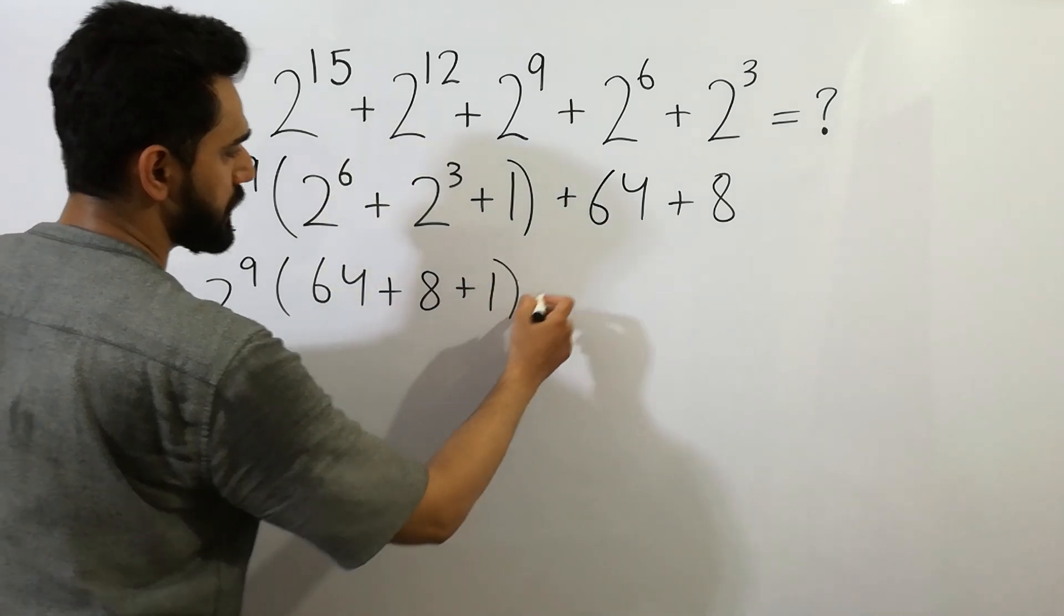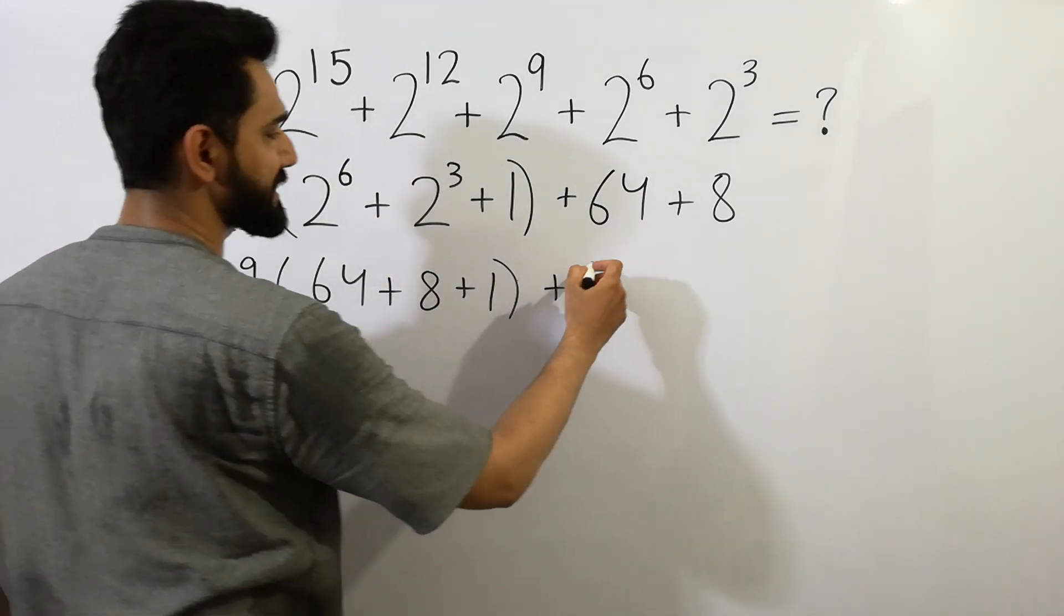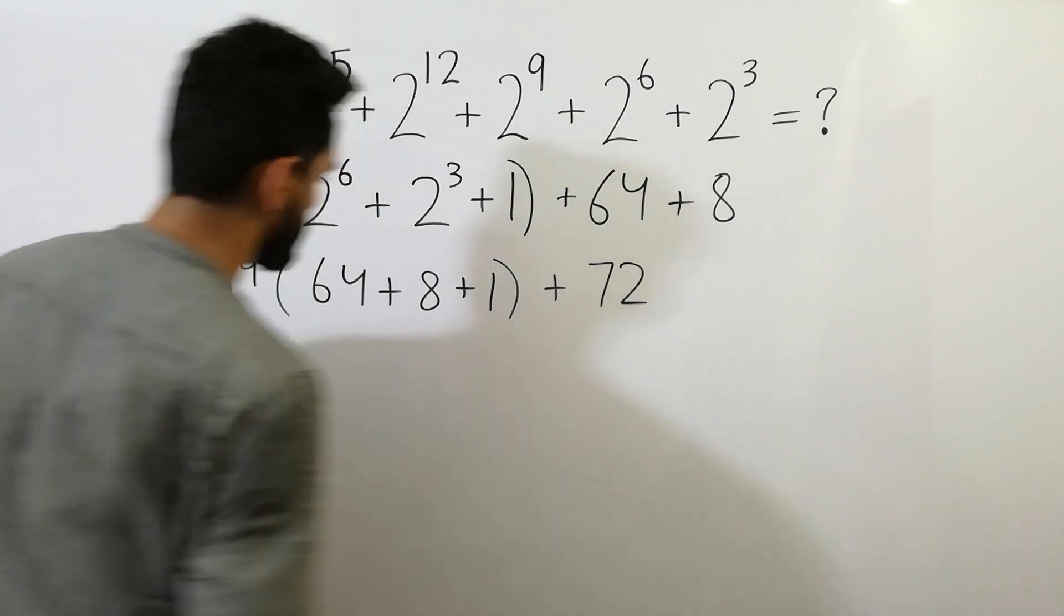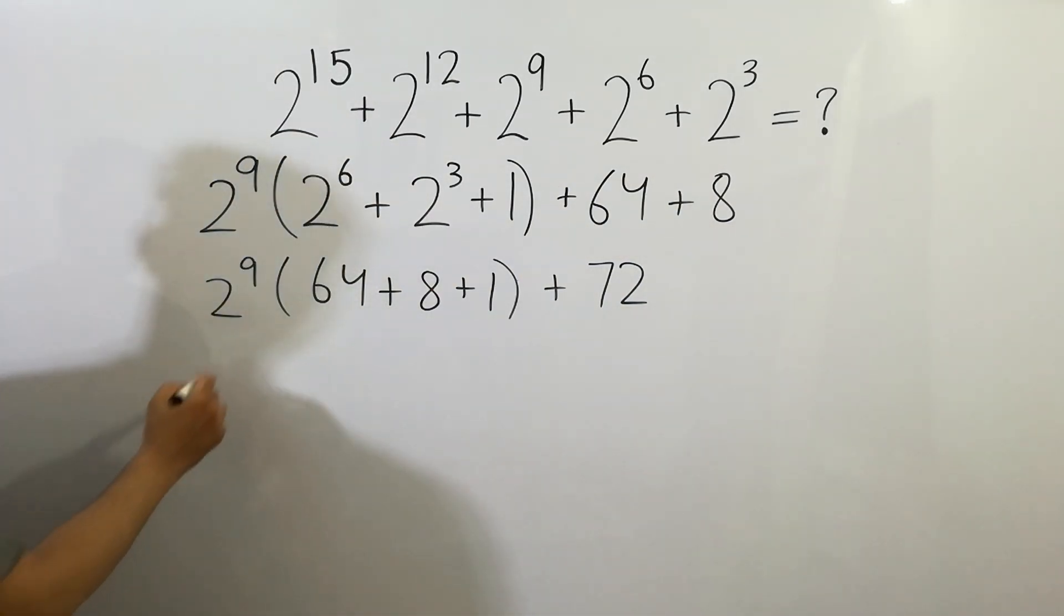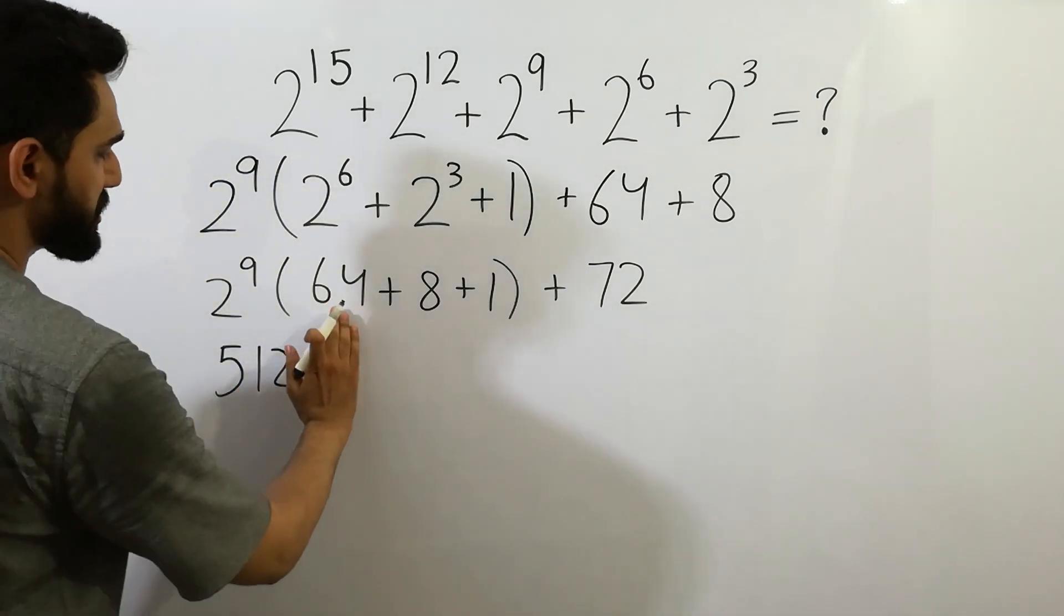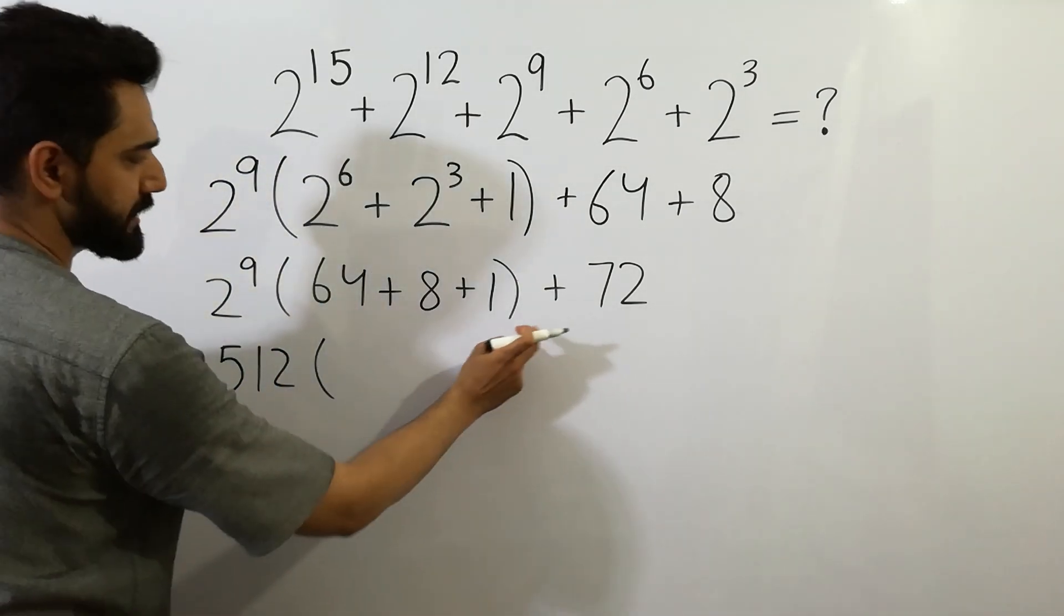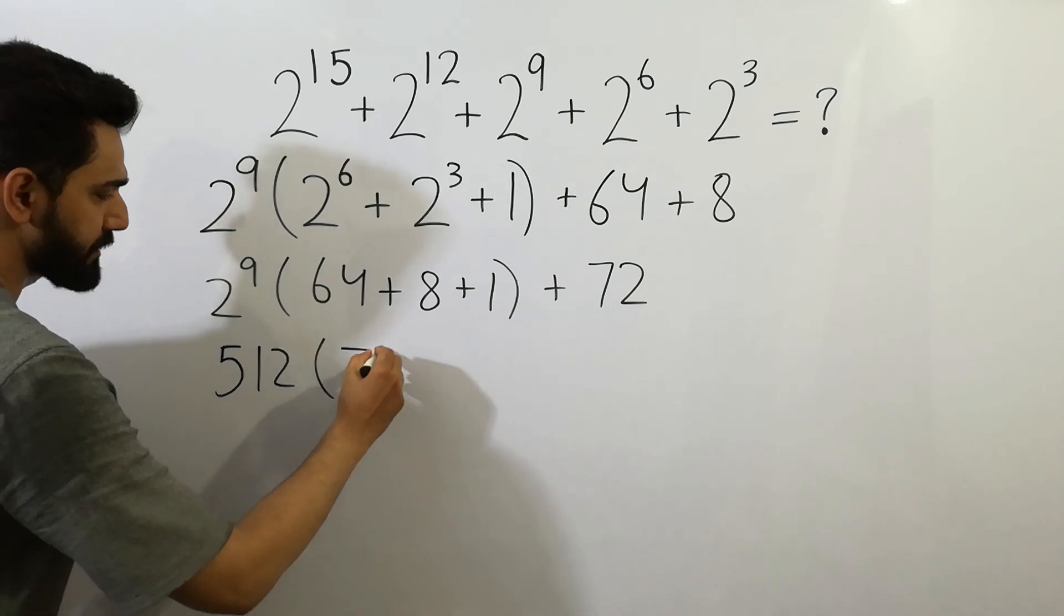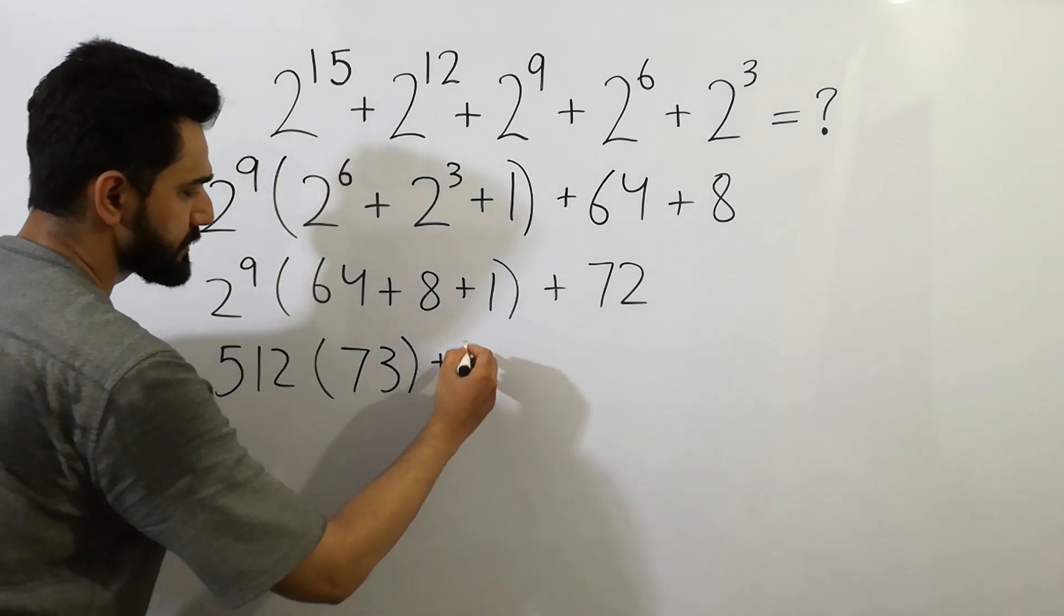plus 1. And 64 plus 8 equals 72. Next, 2 to the power 9 is equal to 512, and 64 plus 8 is 72, plus 1 is 73, plus 72...